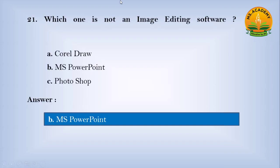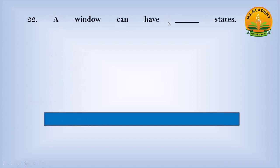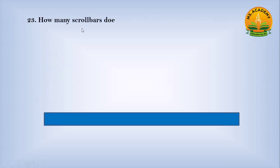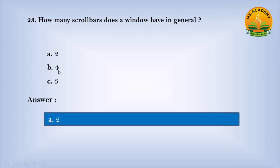Which one is NOT an image editing software? Option A: CorelDRAW, option B: MS PowerPoint, option C: Photoshop. Answer: B — MS PowerPoint. A window can have how many states? Option A: 2, option B: 3, option C: 4. Answer: B — 3. How many scroll bars does a window have in general? Option A: 2, option B: 4, option C: 3. Answer: A — 2.